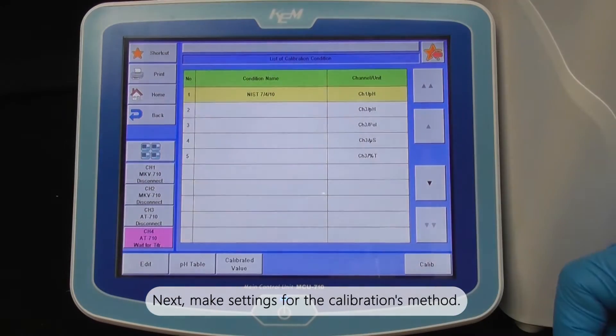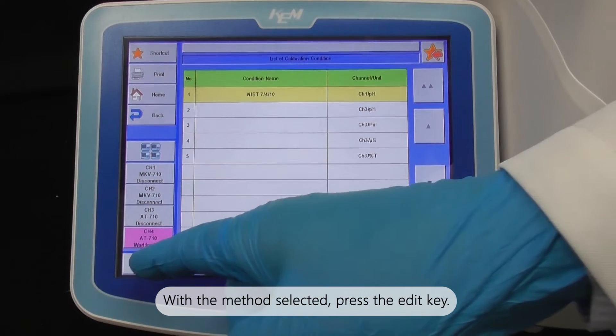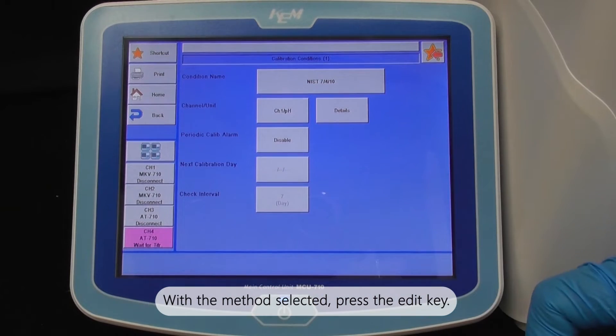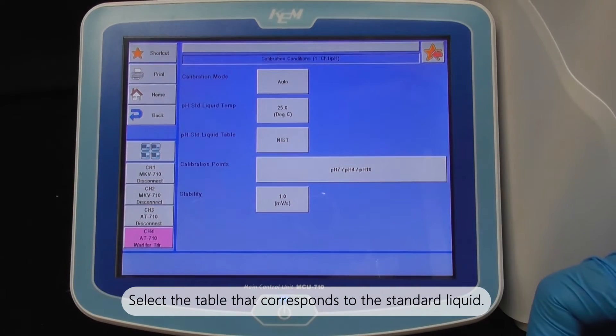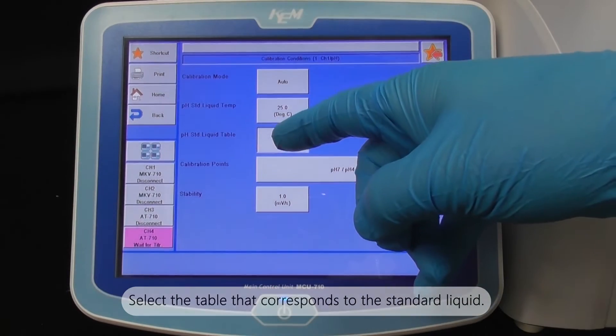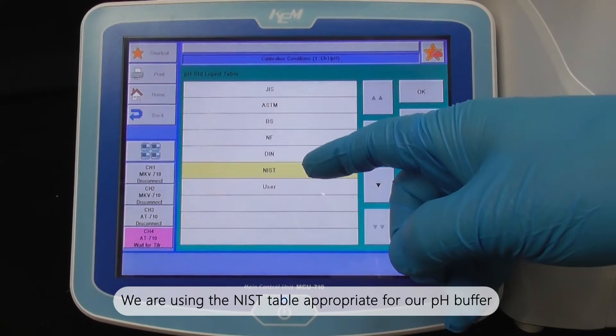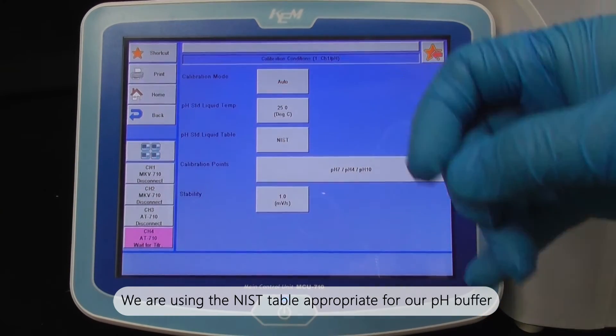Next, make settings for the calibration method. With the method selected, press the edit key. Select the table that corresponds to the standard liquid. We are using the NIST table appropriate for our pH buffer.